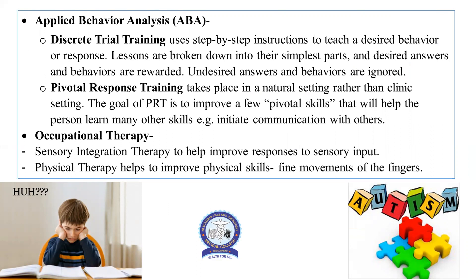Applied Behavior Analysis (ABA) is one model for managing autistic children. It includes discrete trial training, where step-by-step instructions are given to teach a desired behavior or response — lessons are broken down into small parts, and desired answers and behaviors are rewarded each time while undesired behaviors are ignored, not punished. The second component is pivotal response training, which takes place in a natural setting rather than a clinic, aiming to improve a few pivotal skills that help the person learn many other skills, such as initiating communication with others.